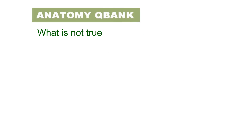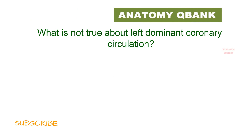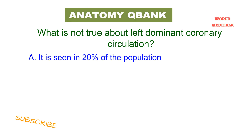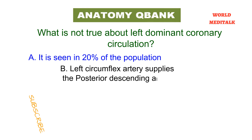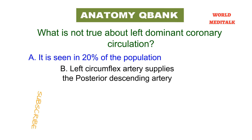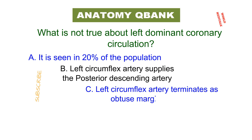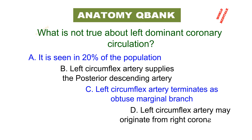What is NOT true about the left dominant coronary circulation? A: It is seen in 20 percent of the population. B: Left circumflex artery supplies the posterior descending artery. C: Left circumflex artery terminates as obtuse marginal branch. D: Left circumflex artery may originate from right coronary sinus. Pause the video and think about the answer.